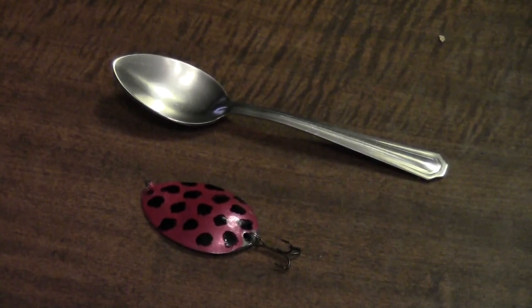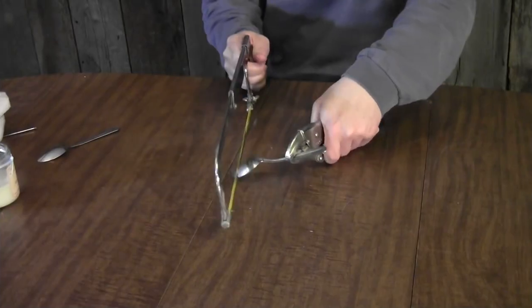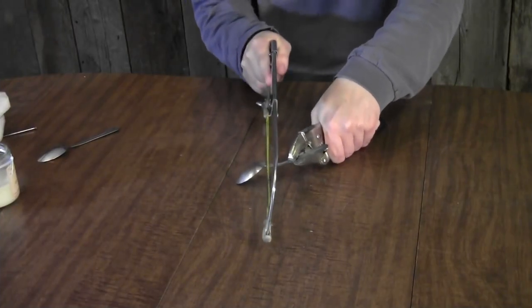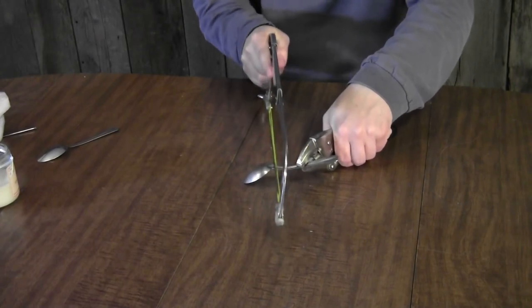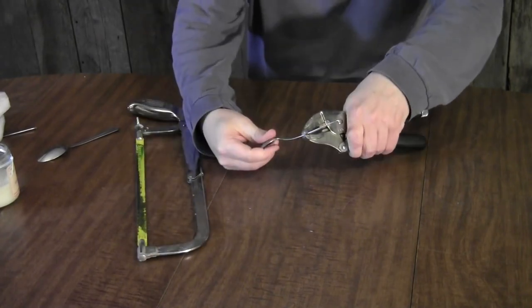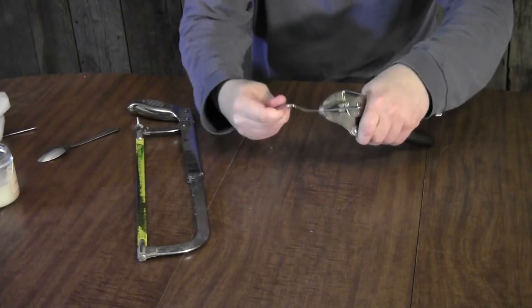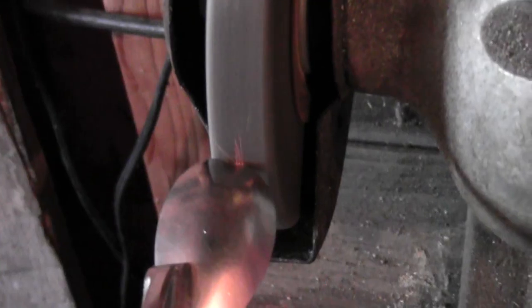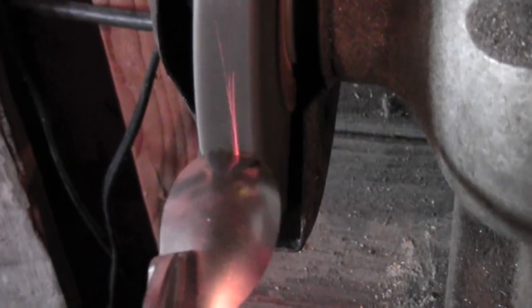After you have eye protection on, the first thing you need to do is get a hacksaw and cut the handle off the spoon. You're going to want to cut it as close to the spoon itself as possible, and once you get about halfway through cutting it, the handle will probably break off on its own. You just bend it back and forth until it breaks.